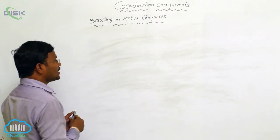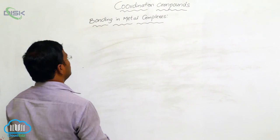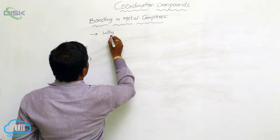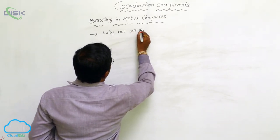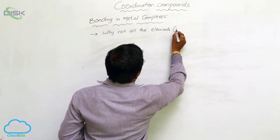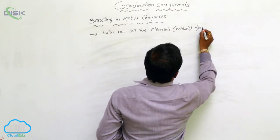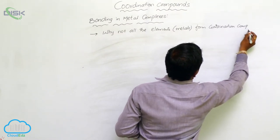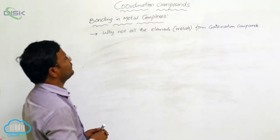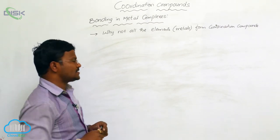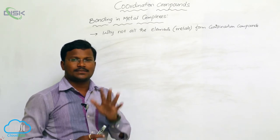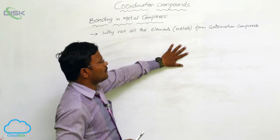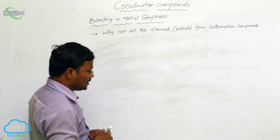Let us look at what are the drawbacks we can identify in Werner's theory of metal complexes. The first drawback: why not all the metal atoms or elements form coordination complexes or coordination compounds? Only a limited number of metals, especially those elements belonging to the d-block or transition metals, provide formation of coordination complexes. Why can't the remaining elements form coordination complexes?